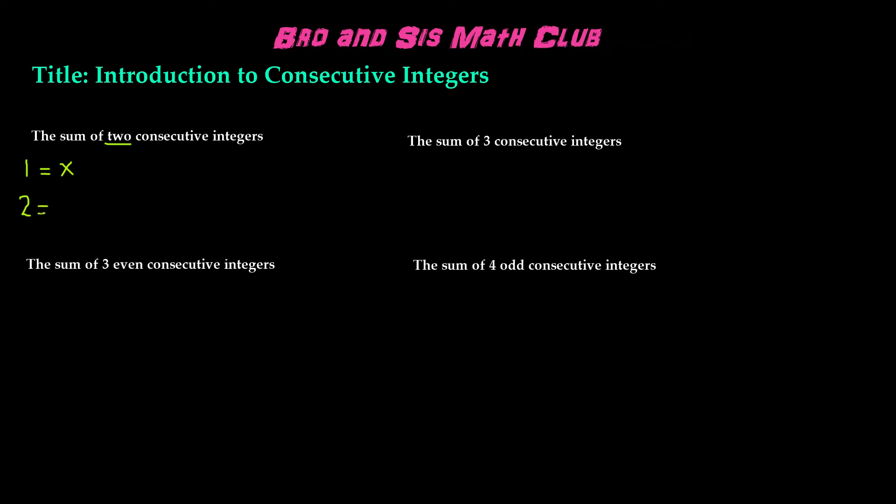The second is going to be x plus 1. Why? Because they're consecutive integers, and consecutive integers go in a patterned order. So unless it says even or odd, which is what we have in the third and fourth examples, we will just simply do x and x plus 1. This is how we're going to set up for the sum of two consecutive integers.